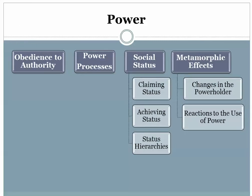We have discussed the Milgram experiment and his demonstration of obedience to authority, and we've talked briefly about power processes. The next thing I'd like to talk about is social status — how influence is exerted and enjoyed by individuals who are higher in the status hierarchy relative to those who are lower. Thank you, as always, for joining me.